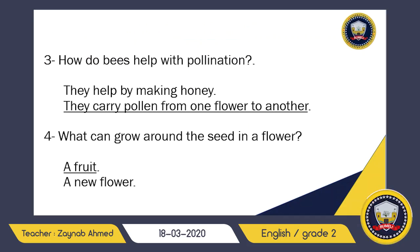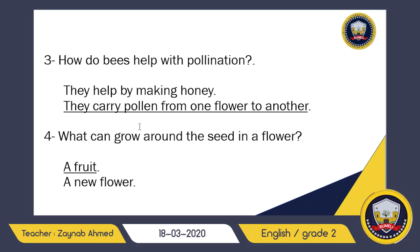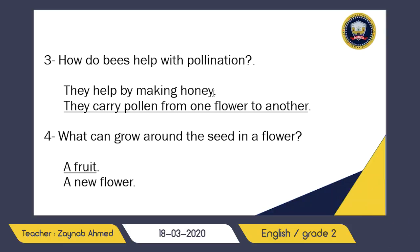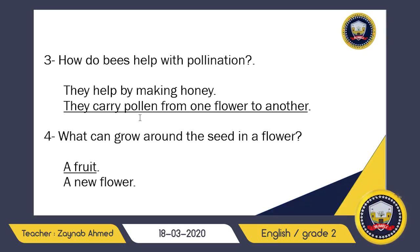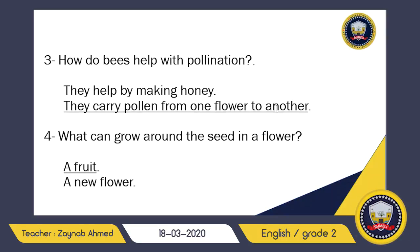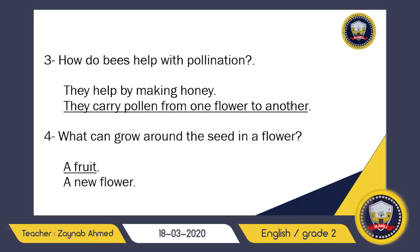Number three: how do bees help with pollination — do they help by making honey, or do they carry pollen from one flower to another? Bees do make honey, that's true, but the question is how do they help with pollination. They help by carrying pollen. Pollination only takes place when pollen moves from one flower to another, so the correct answer is they carry pollen from one flower to another.